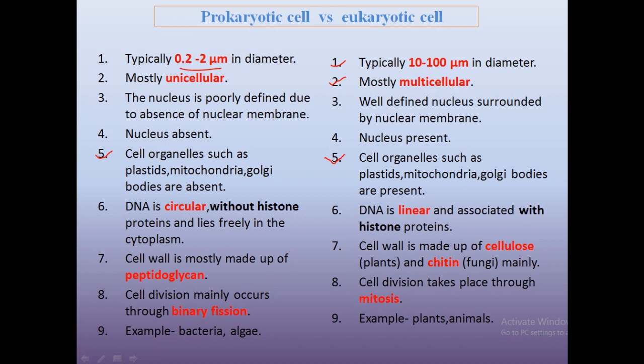In prokaryotic cells, DNA is circular and there is no histone protein, and the DNA lies freely in the cytoplasm. In eukaryotic cells, DNA is linear and associated with histone proteins.